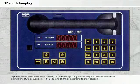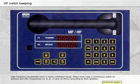High frequency broadcasts have a nearly unlimited range. Ships must keep a continuous watch on distress and DSC frequencies of 4, 6, 8, 12, and 16 MHz, according to their position.